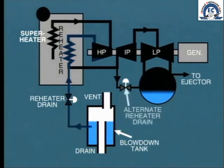To avoid this, reheater drains would normally be connected to the condenser during the startup period. The connection to the blowdown tank would only be used to drain the horizontal reheater before lighting the boiler.